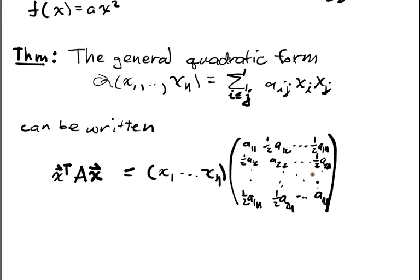The matrix where I've basically split the coefficients this way, and you can work out that this multiplication will recover the sum. That's pretty simple, and that's the basic theorem. You can just prove it by multiplying things out.